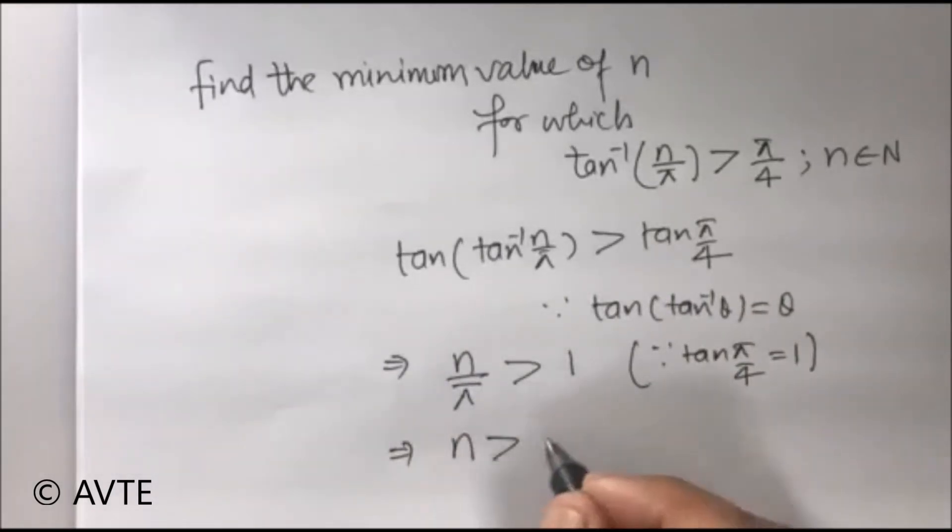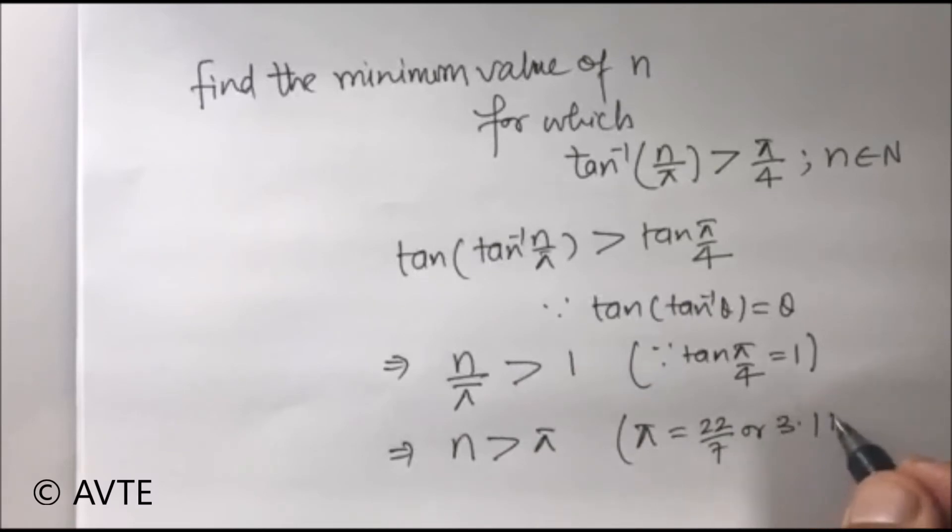Now, n is greater than pi and we know that pi is 22 by 7 or approximately 3.14.